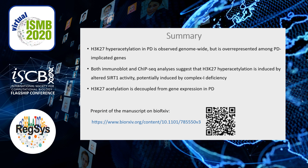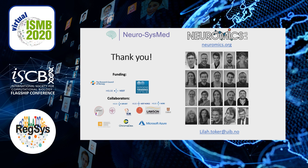To summarize: H3K27ac hyperacetylation is observed genome-wide but is over-represented among PD-implicated genes. Both immunoblot and ChIP-seq analyses suggest H3K27ac hyperacetylation is induced by altered sirtuin activity, potentially due to complex I deficiency. And H3K27ac hyperacetylation is decoupled from gene expression. The preprint is available on bioRxiv. Thank you to the members of my lab, and if you have questions, please feel free to email me.